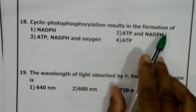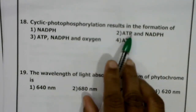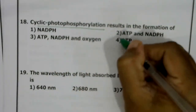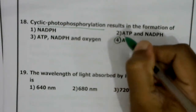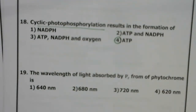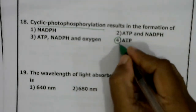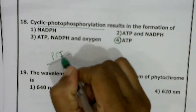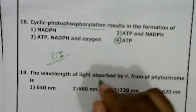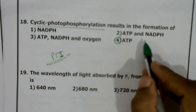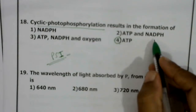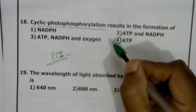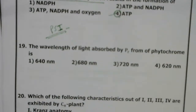Cyclic photophosphorylation results in formation of: NADPH; ATP and NADPH; ATP, NADPH and oxygen; or ATP only? During cyclic photophosphorylation, only ATP is formed — there is no formation of NADPH2. It involves only PS1. PS1 lacks NADPH reductase enzyme, so it is not able to reduce NADP. Therefore only ATP is produced. Correct answer: fourth option, ATP only.